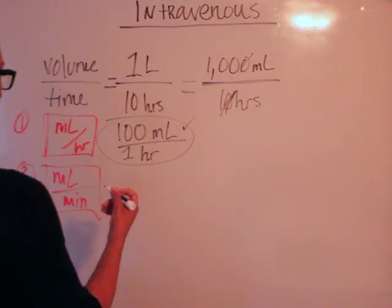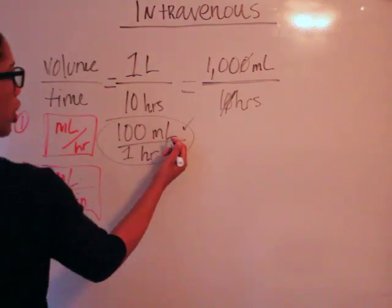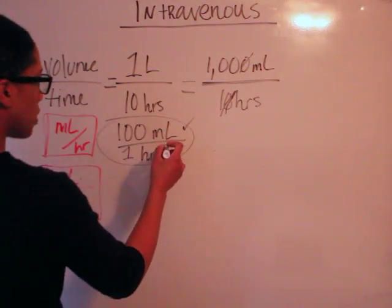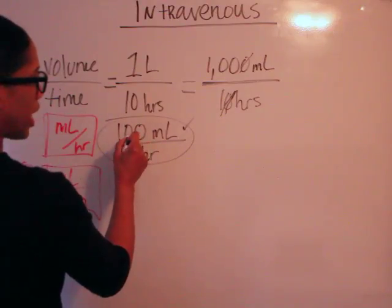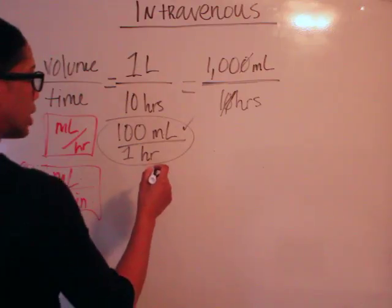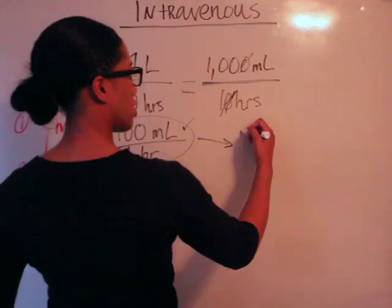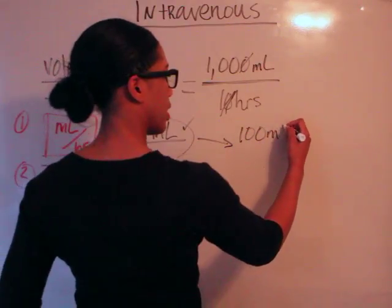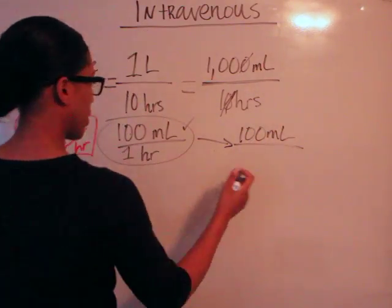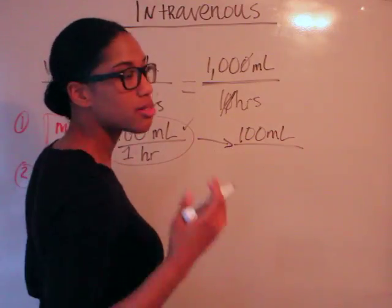Milliliters per minute. Let's just start here where we left off from. We already know it's 100 milliliters per hour. So let's start from here and convert that hour into minutes since this is already in milliliters. Let's convert that to minutes, which in one hour we know is 60 minutes.